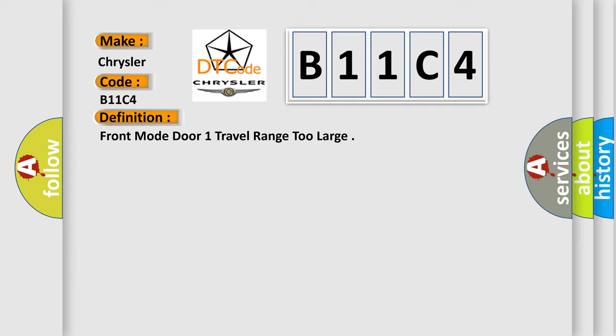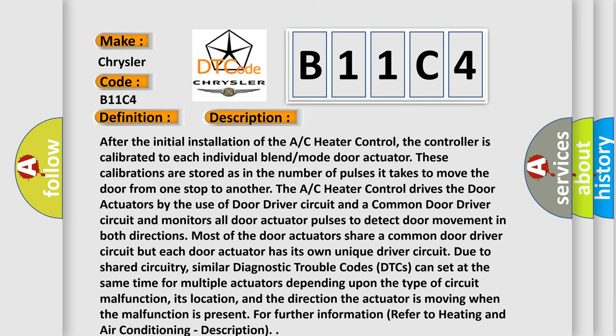Here is a short description of this DTC code. After the initial installation of the AC heater control, the controller is calibrated to each individual blend mode door actuator. These calibrations are stored as the number of pulses it takes to move the door from one stop to another. The AC heater control drives the door actuators using a door driver circuit and a common door driver circuit, and monitors all door actuator pulses to detect door movement in both directions.